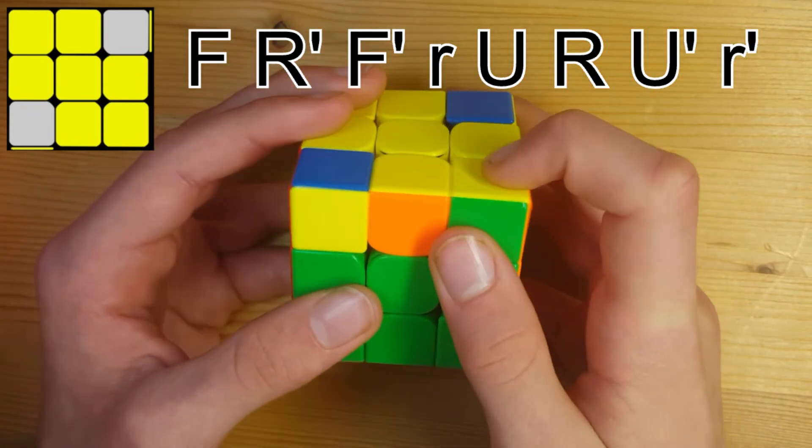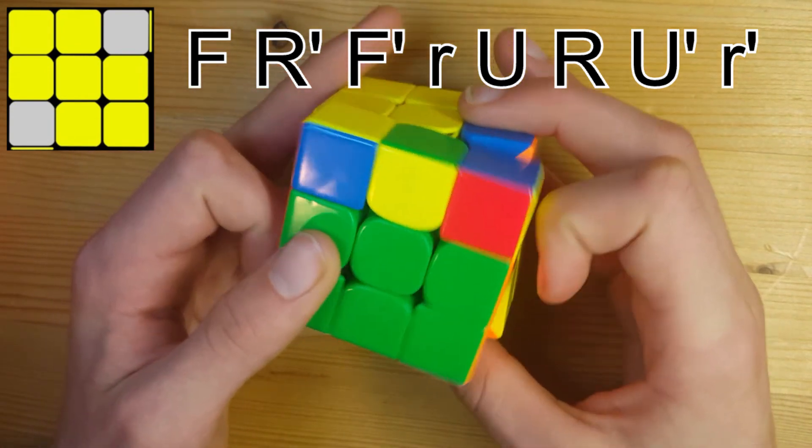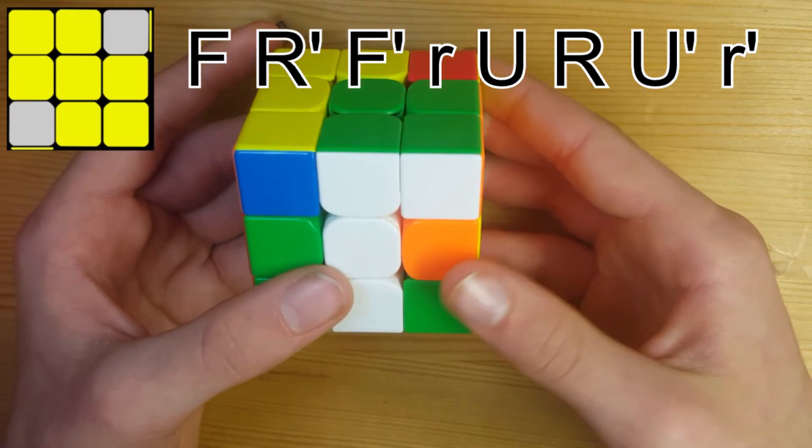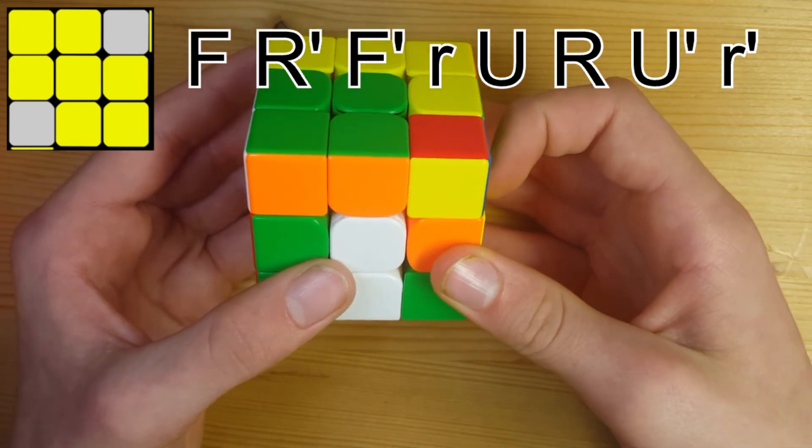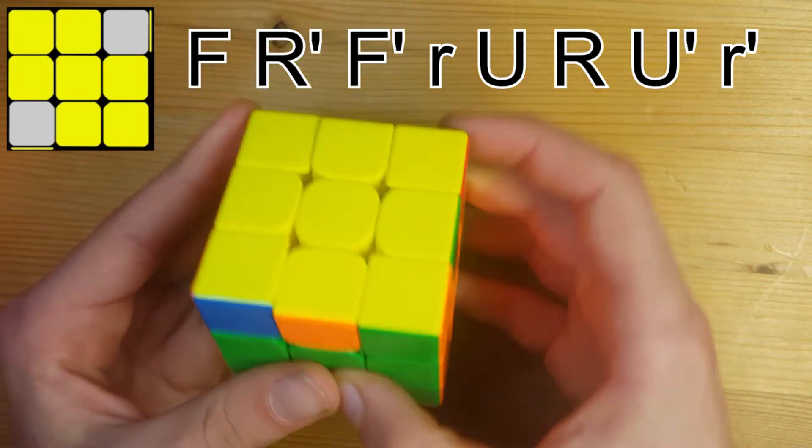And you're going to go like this. You're going to do an F move. You're going to bring this layer down, bring this back, and then you're going to bring two layers up like this. And then you're just going to undo everything, move this over like this, bring the side up, bring this side over, and then bring the two layers down.